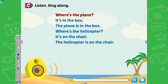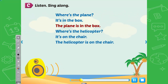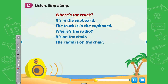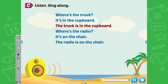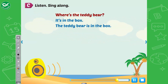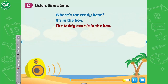Where's the plane? It's in the box. The plane is in the box. Where's the helicopter? It's on the chair. The helicopter is on the chair. Where's the truck? It's in the cupboard. The truck is in the cupboard. Where's the radio? It's on the chair. The radio is on the chair. Where's the teddy bear? It's in the box. The teddy bear is in the box.